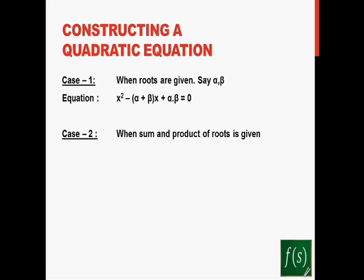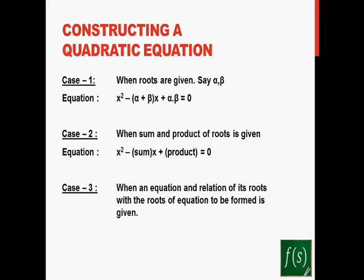Case two: when you have the sum and product of the roots given and you are asked to form a quadratic equation. Your quadratic equation will look like this: x squared minus (sum of the roots)·x plus (product of the roots) equals zero.